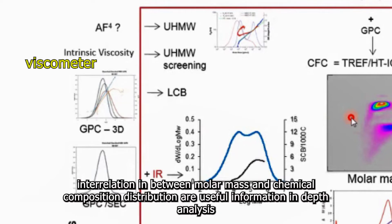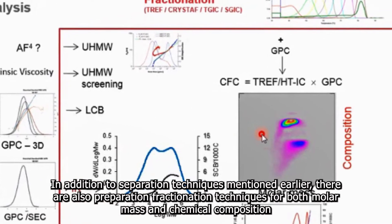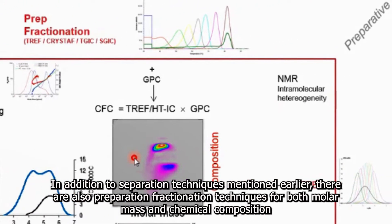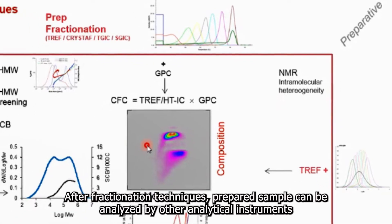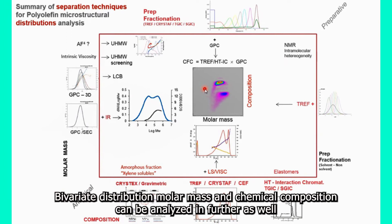Interrelations between molar mass and chemical composition distribution are useful information in depth analysis. In addition to separation techniques mentioned earlier, there are also preparative fractionation techniques for both molar mass and chemical composition. After fractionation techniques, prepared samples can be analyzed by other analytical instruments.